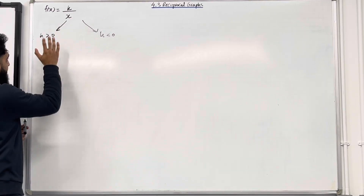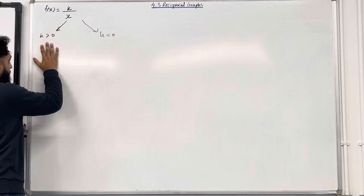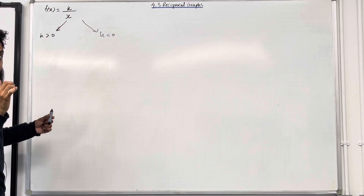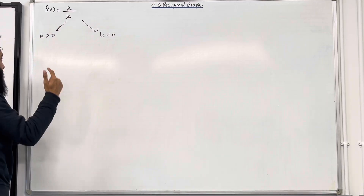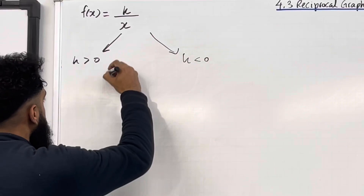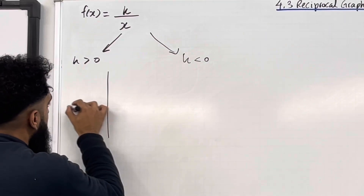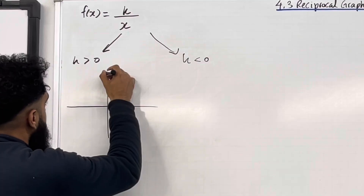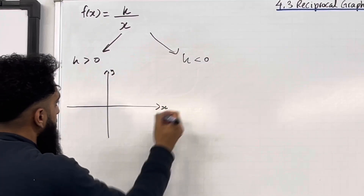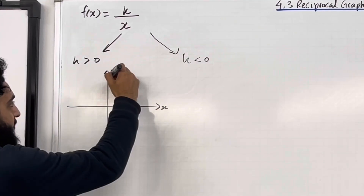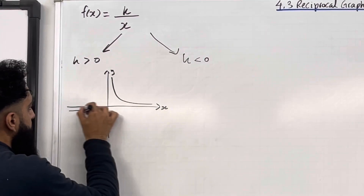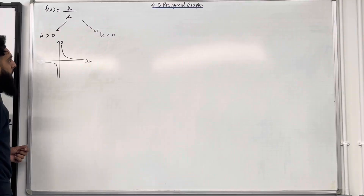Let's look at k is greater than 0. What will the graph look like? Well, it will look something like this. I've got my coordinate grid with y and x axis. This is the shape of the graph.